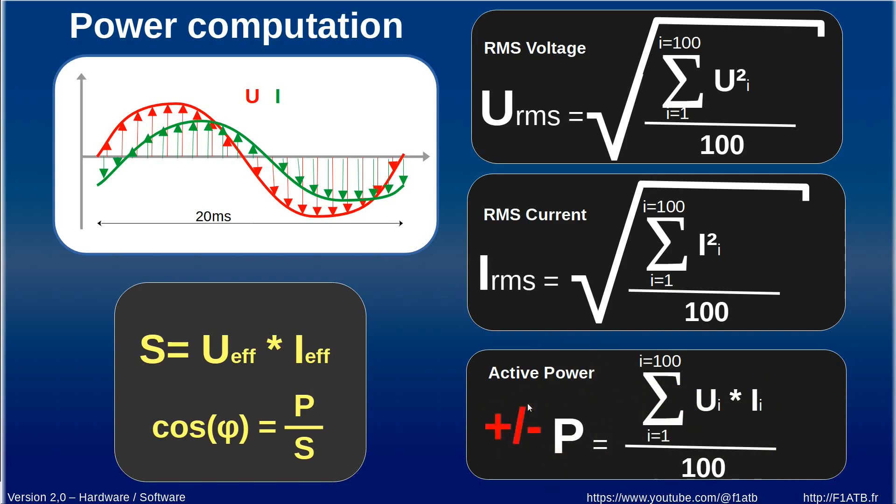If this active power is positive that corresponds to the convention we take input of energy in-house, if it's negative it's an output of energy in the house.